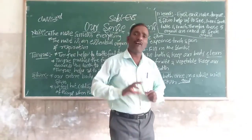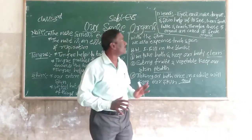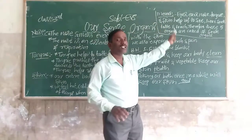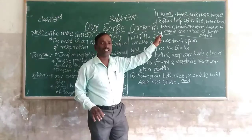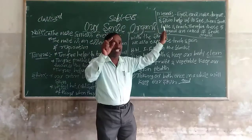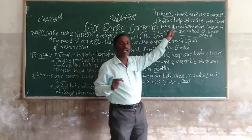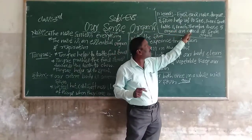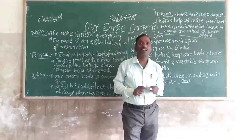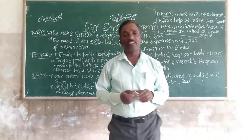To summarize, we have understood what sense organs are. The five sense organs are: eyes, ears, nose, tongue, and skin. They help us to see, hear, smell, taste, and touch. Therefore, these five organs are called our sense organs.